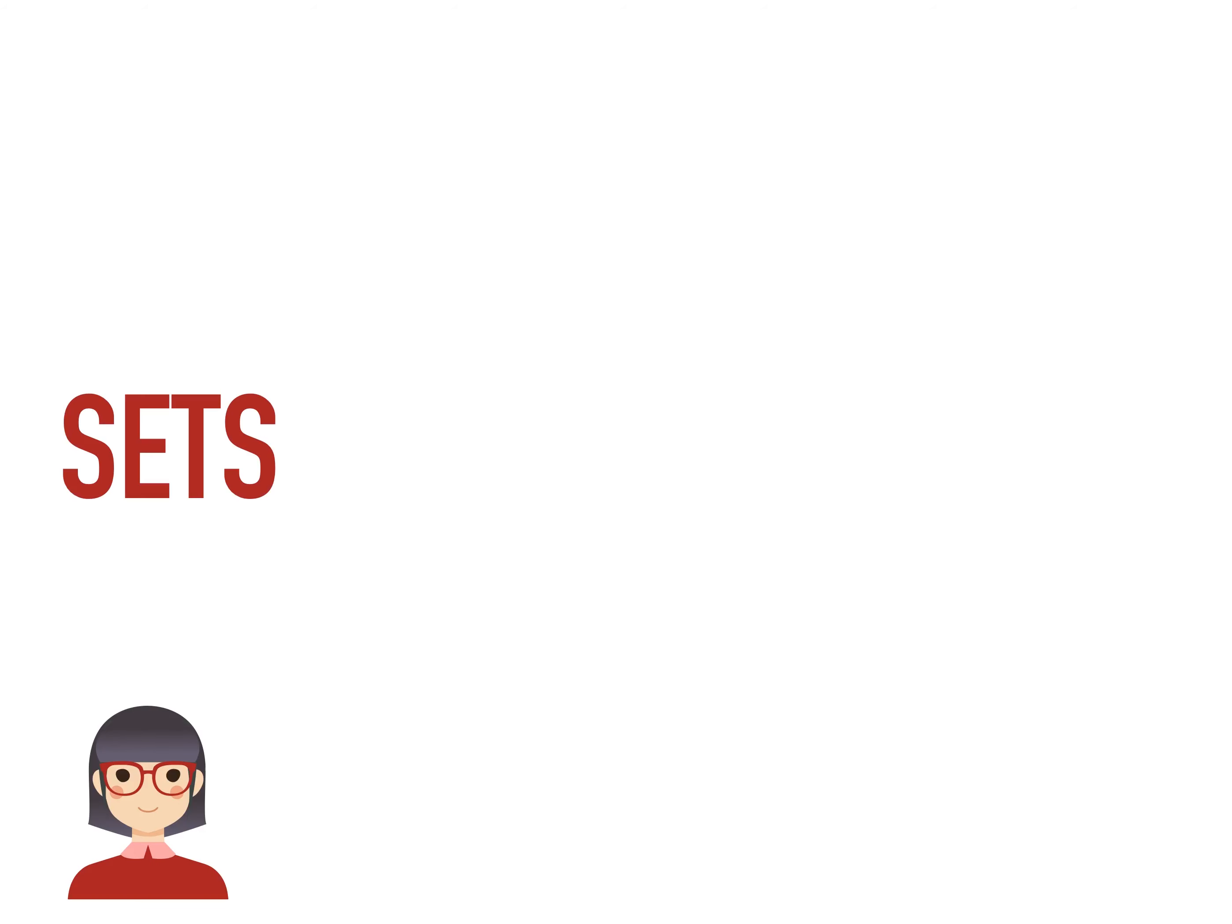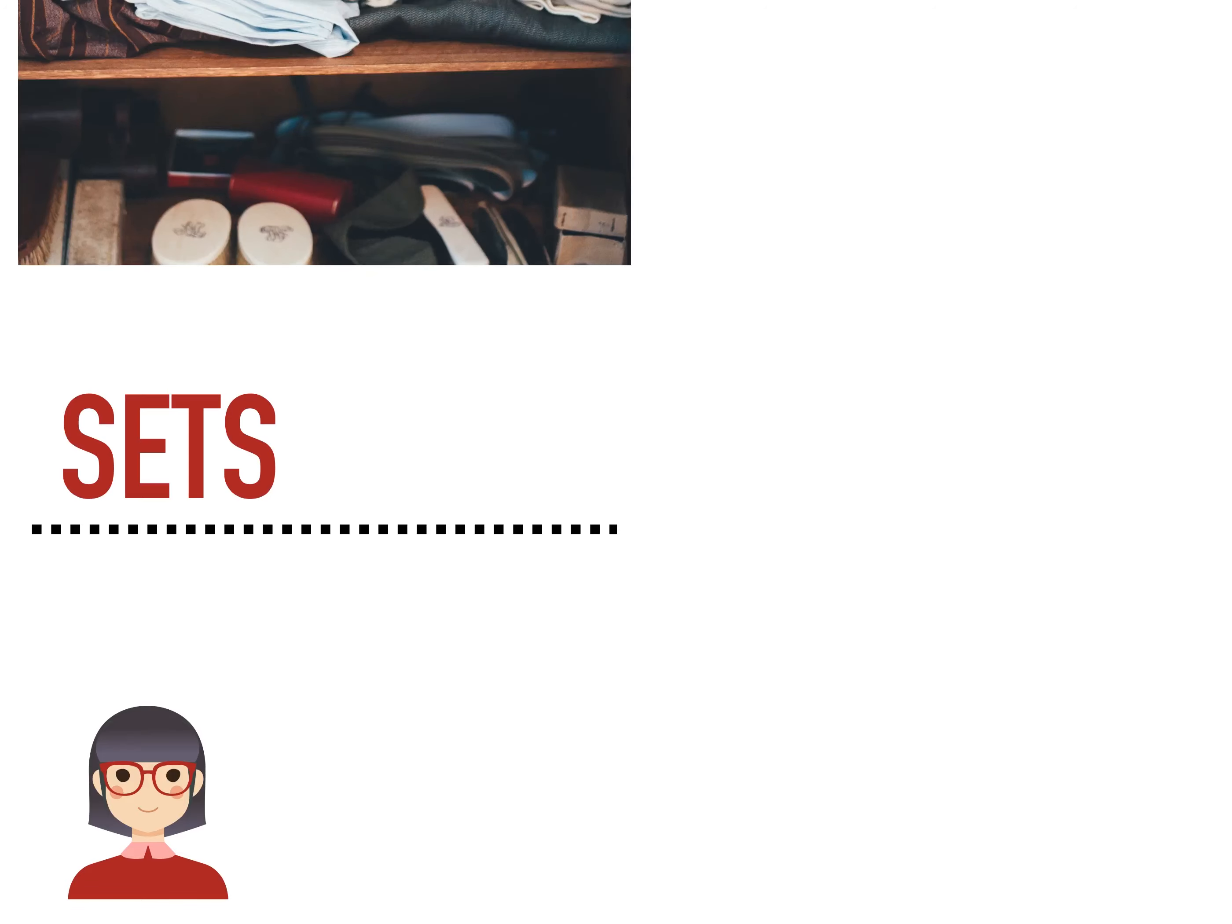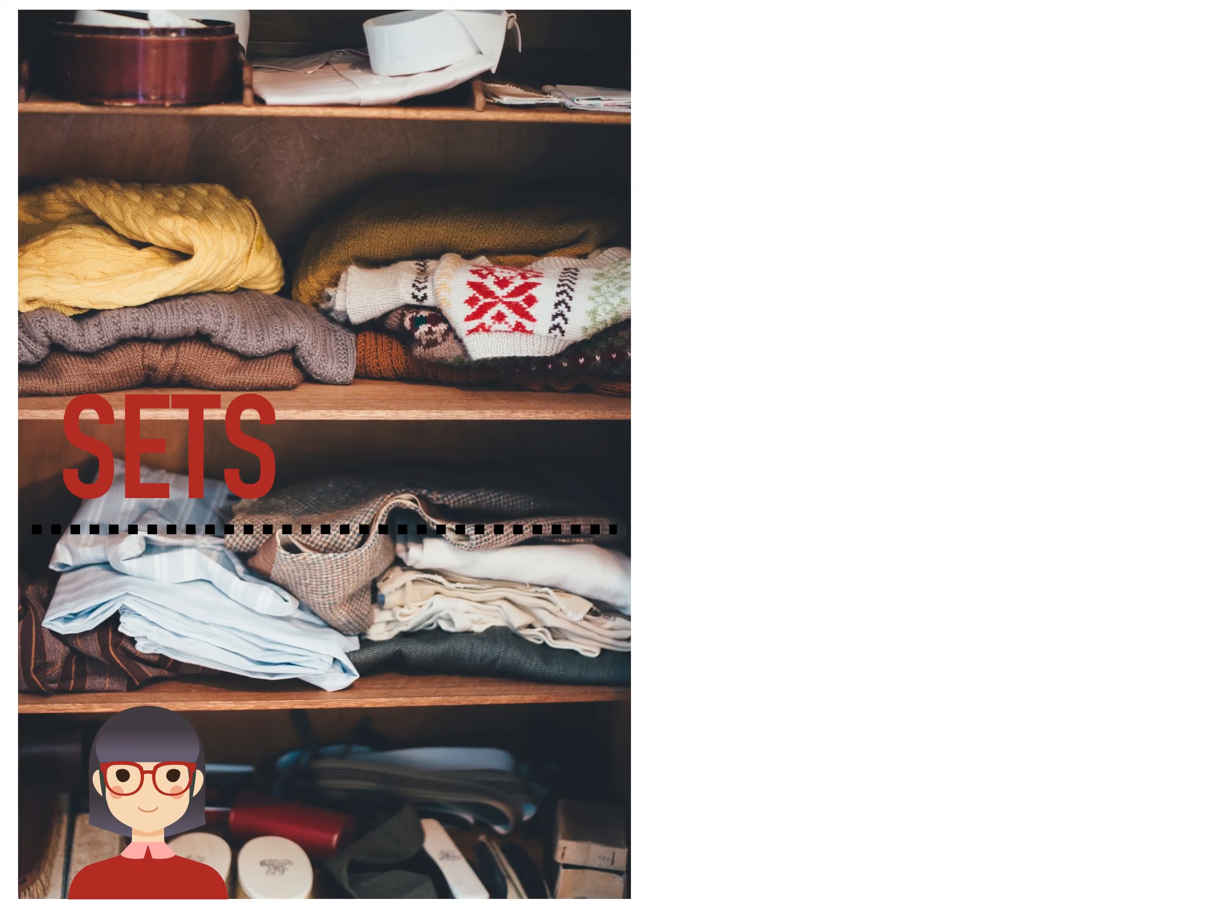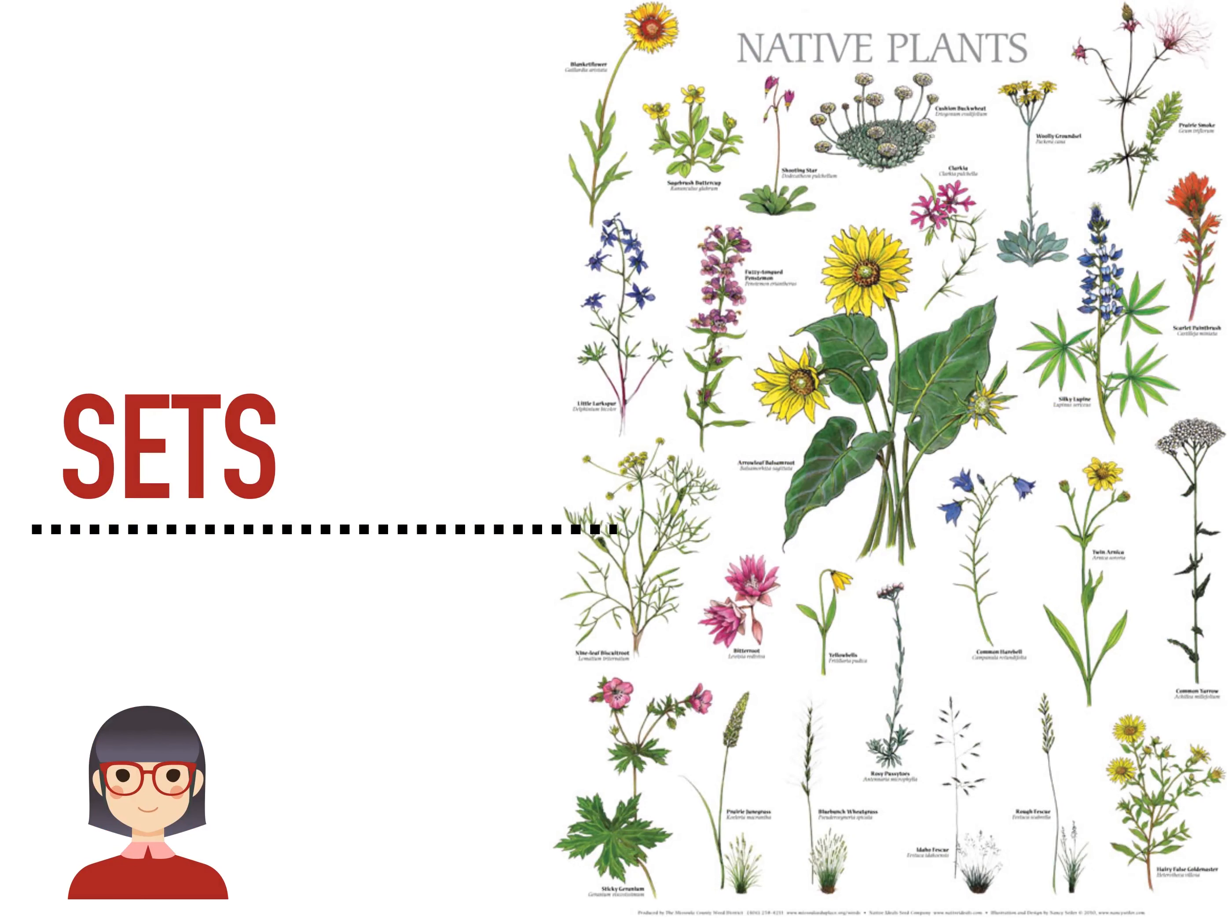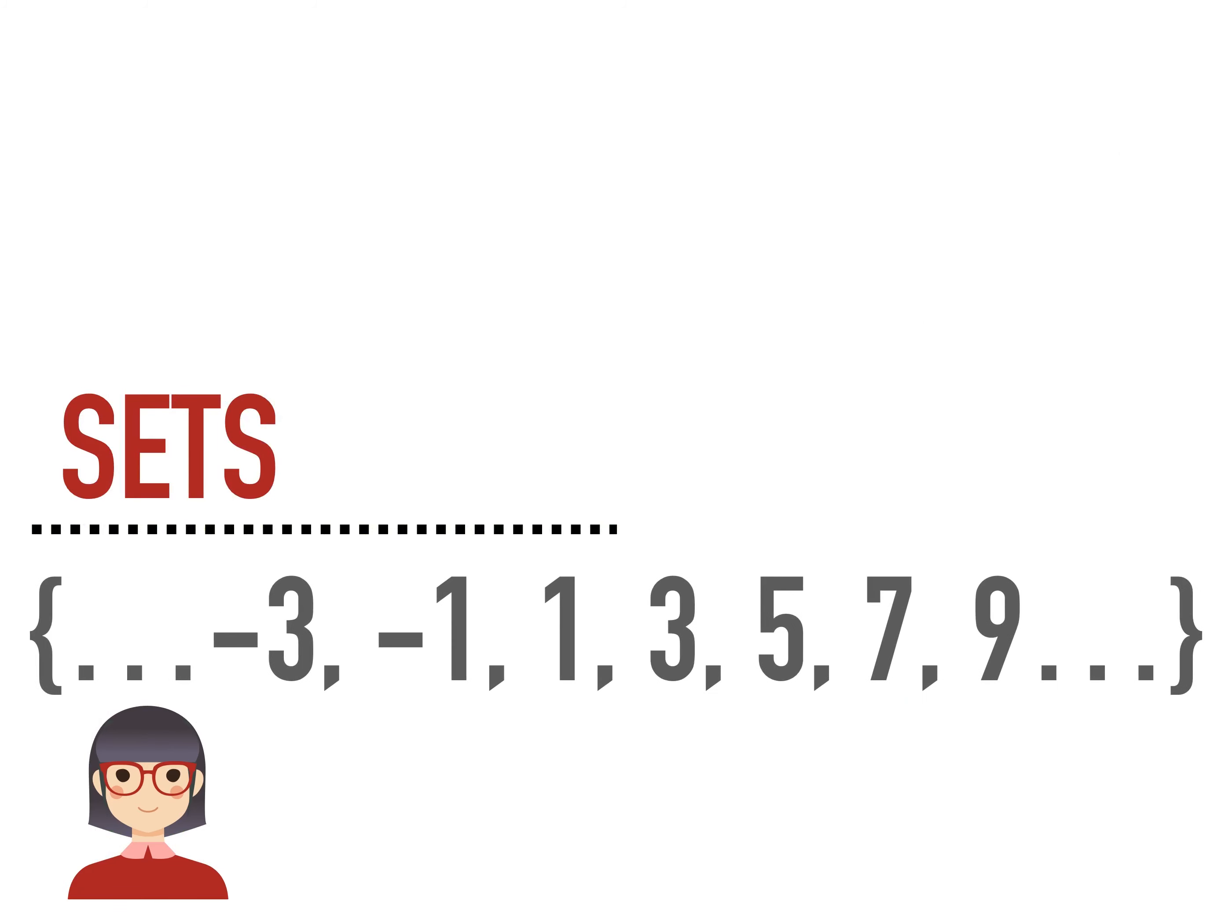A set is one of the most basic concepts in mathematics. At the simplest level, it means a collection of things, which we call elements. For example, the collection of clothes in your closet, the species of flowers that are native to Montana, and the collection of all possible odd numbers can each be thought of as a set.